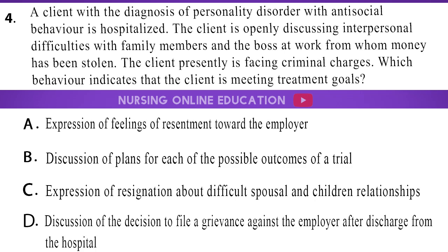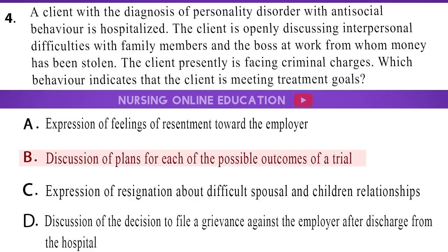Question 4: A client with the diagnosis of personality disorder with antisocial behavior is hospitalized. The client is openly discussing interpersonal difficulties with family members and the boss at work from whom money has been stolen. The client is presently facing criminal charges. Which behavior indicates that the client is meeting treatment goals? A. Expression of feelings of resentment toward the employer. B. Discussion of plans for each of the possible outcomes of a trial. C. Expression of resignation about difficult spousal and children relationships. D. Discussion of the decision to file a grievance against the employer after discharge. The answer is option B: Discussion of plans for each of the possible outcomes of a trial.